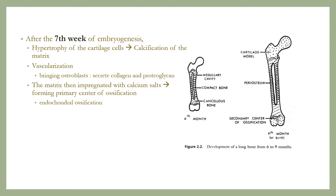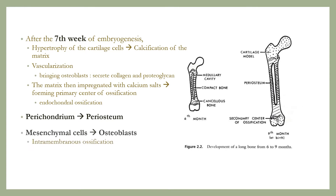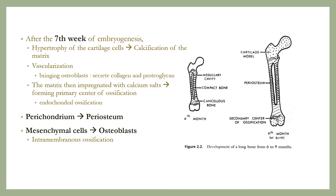This process of replacement of cartilage by bone is called endochondral ossification. The perichondrium has by this time become periosteum, and in its deeper layer the mesenchymal cells, which have differentiated into osteoblasts, lay down bone directly by the process of intramembranous ossification, there being no intermediate cartilaginous phase.